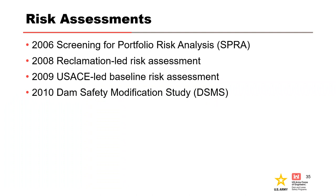The risk assessment started with a screening in 2006, and the dam was classified as high risk. In 2008, Reclamation led a joint risk assessment that resulted in recommendations for interim risk reduction measures and a more detailed baseline risk assessment. Following this, a reservoir restriction was implemented, lowering the summer pool 20 feet to elevation 1650 and a winter pool nearly 30 feet to elevation 1623. Additional instrumentation with more frequent monitoring and 24-hour surveillance were performed in the interim to reduce risk. A baseline risk assessment was performed in 2009 and led to the 2010 Dam Safety Modification Study.